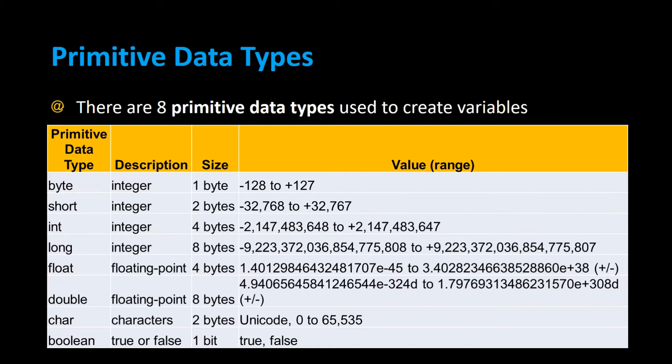For single characters, or any character in the Unicode character set — and there are 65,535 of them — we use the char data type. When you declare a char, make sure you surround the value with single quotes.